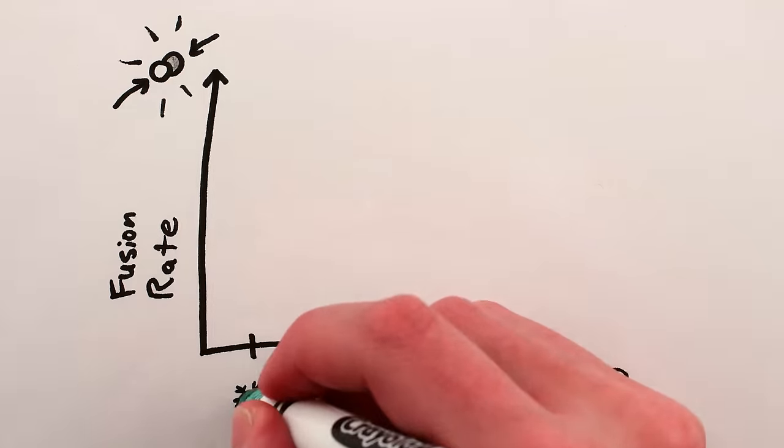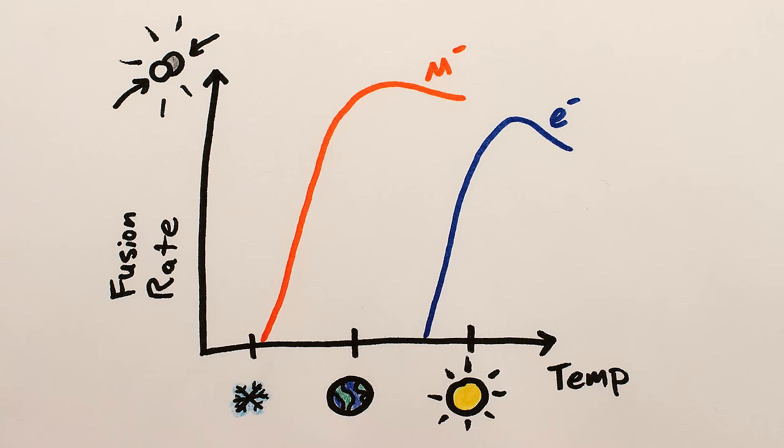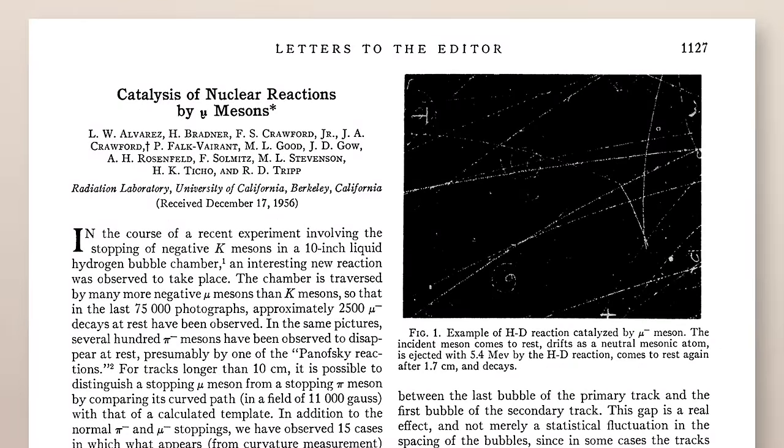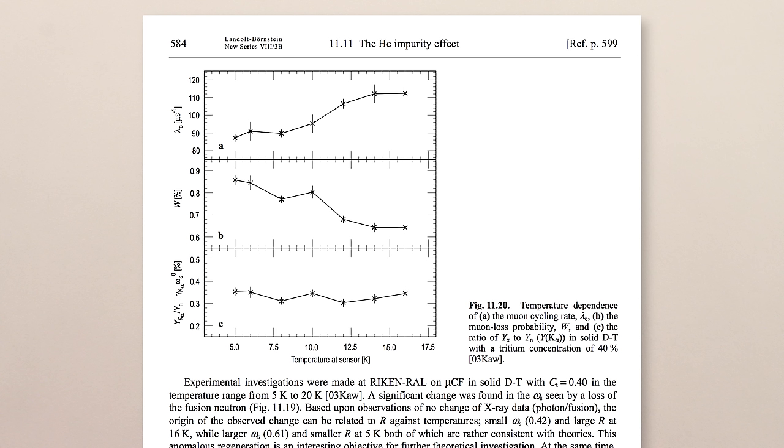So much so that the nuclei in hydrogen molecules made with muons can fuse together at temperatures much lower than the core of the sun. Even room temperature, which was predicted in 1947, and experimentally achieved in 1956. Physicists have even managed to achieve muon-aided nuclear fusion at temperatures close to absolute zero.